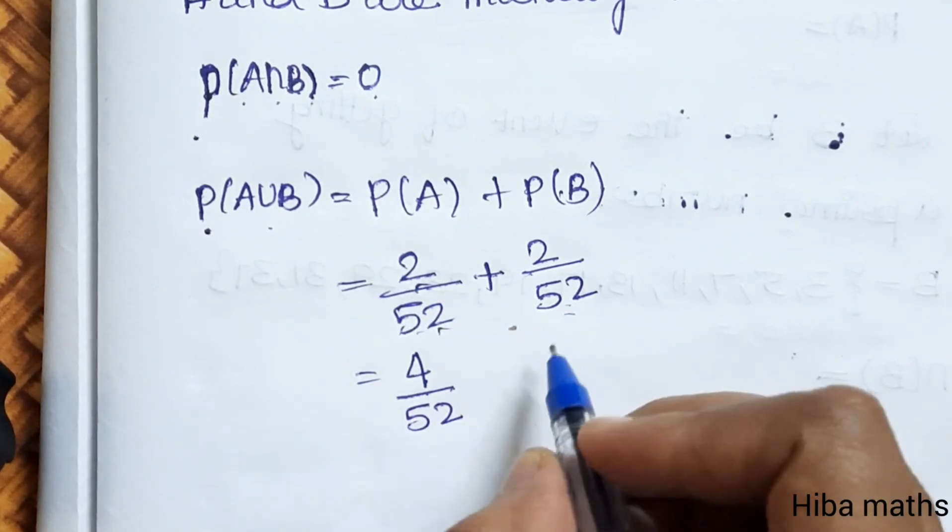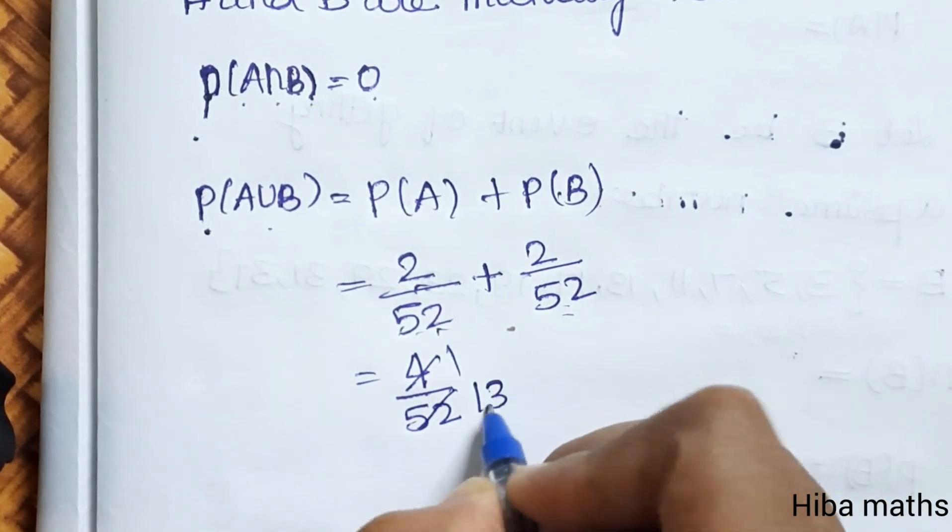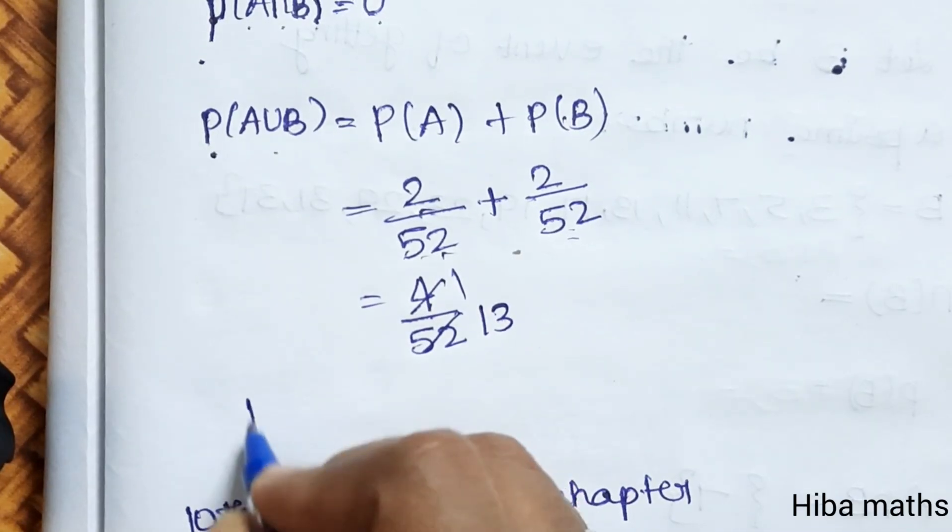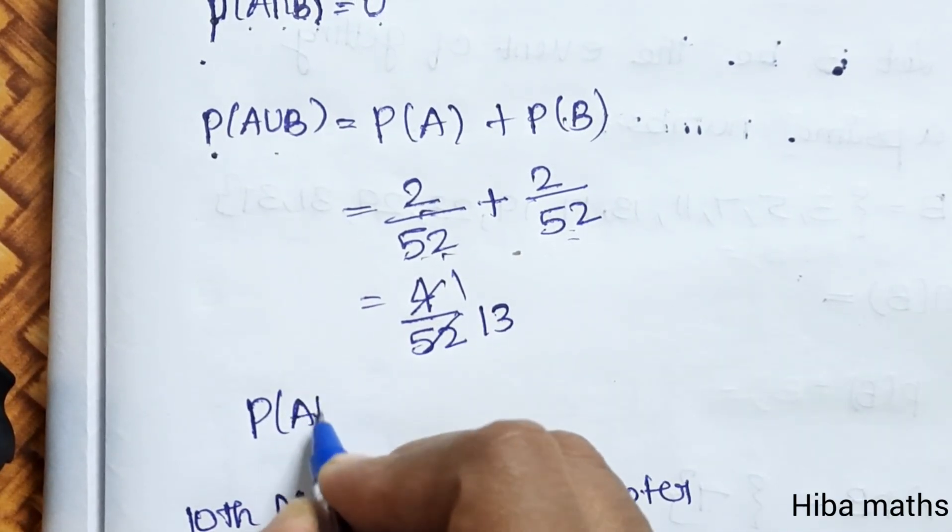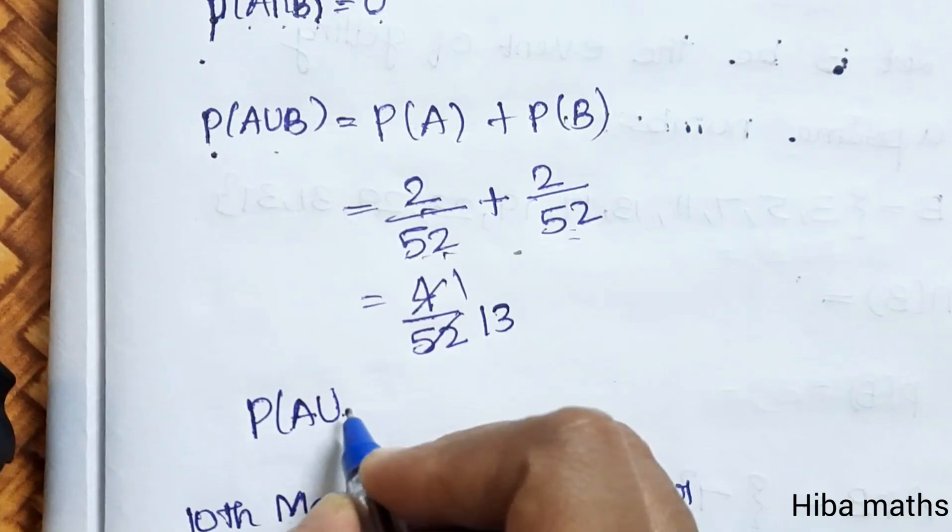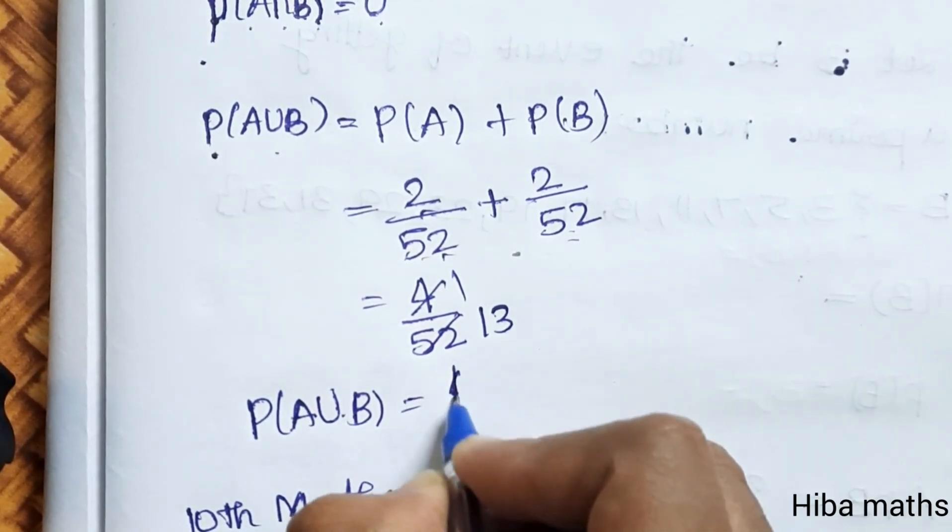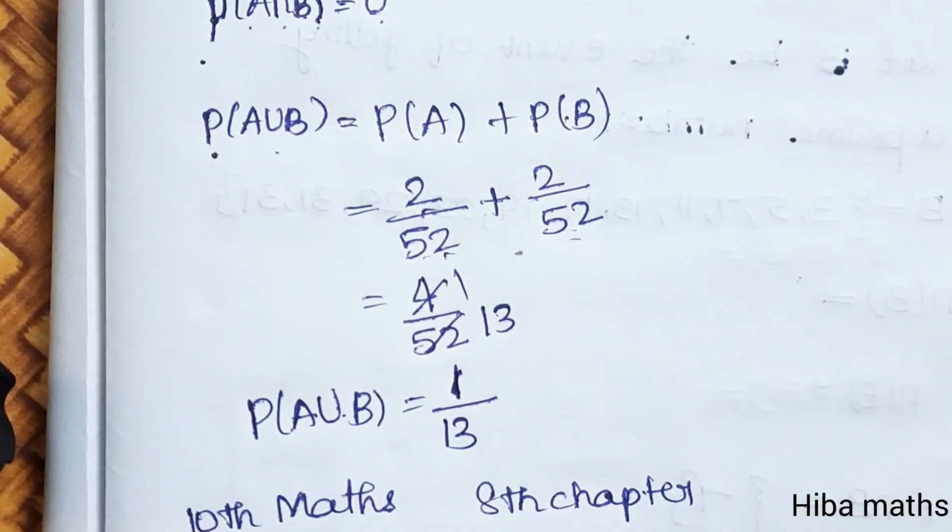Denominator is 13. Now probability of getting a red color king or black color queen is 1 by 13. Everyone can easily understand. Thank you so much for watching.